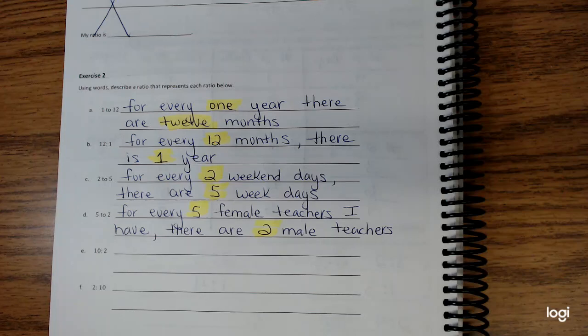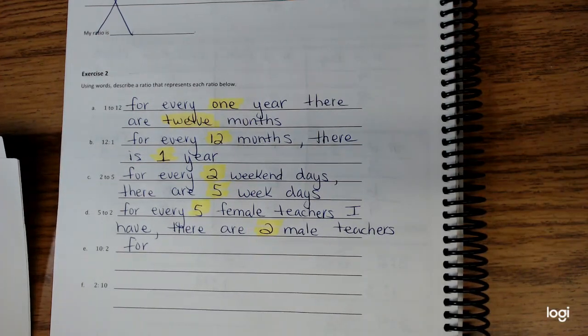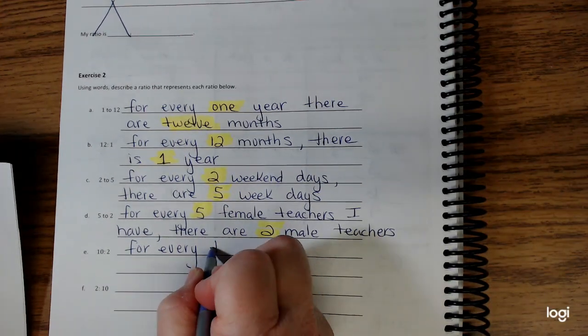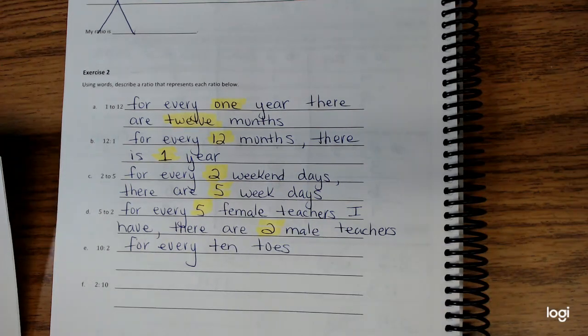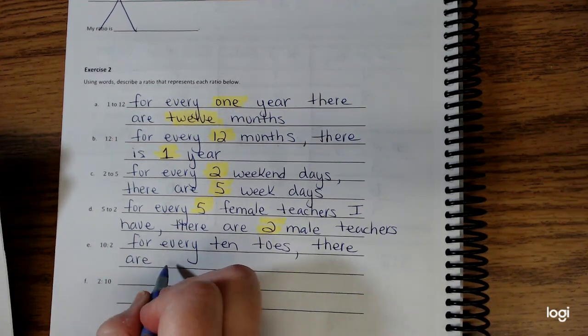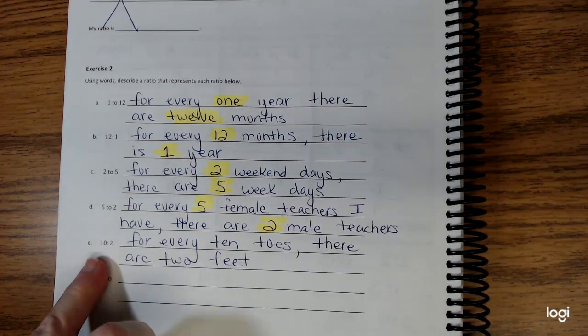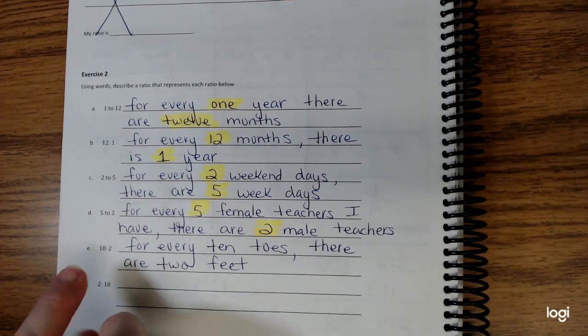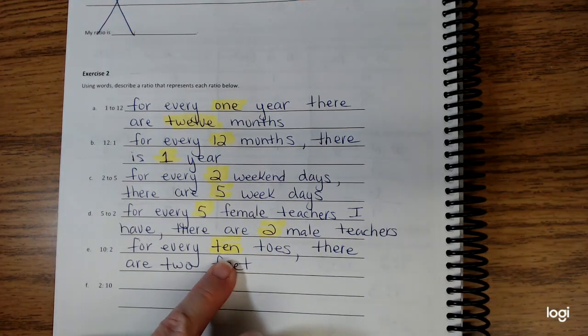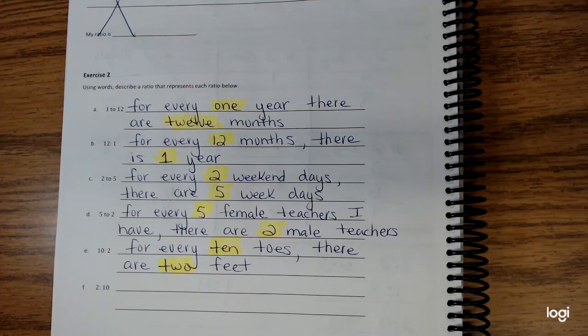The next one is 10 and 2. How about if I would do this: for every ten toes, there are two feet. Hopefully you're starting to learn that when we do a ratio and write something to represent that ratio, we have to make sure that they are in the same order. You will notice that sometimes I wrote the word out for the number and sometimes I used the number.